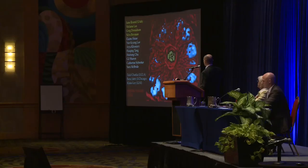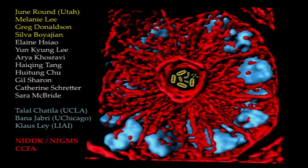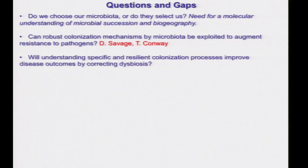I'd like to acknowledge the people who did the work. The PSA work was done by a very talented postdoc, June Round, who now has her own lab at the University of Utah. Melanie worked on the crypt occupancy project with help from a new graduate student, Greg, as well as Silva. I'd like to acknowledge Klaus Le, who takes these wonderful images for us in the colon — instrumental in us understanding the mechanisms by which the CCF genes are working. Funding was from two NIDDK grants, one from GM, and funding from the CCFA.